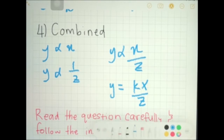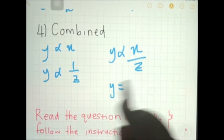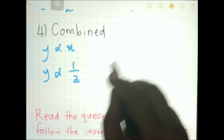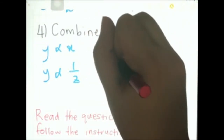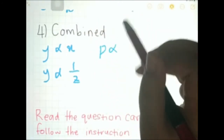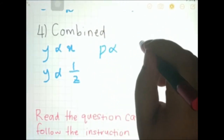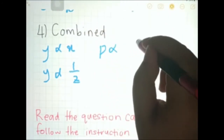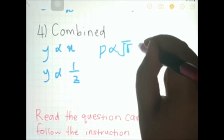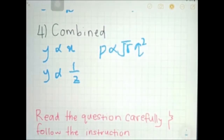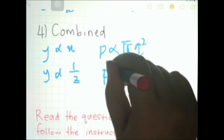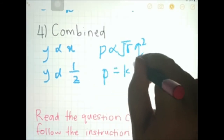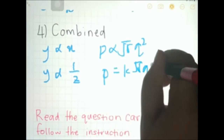Another example: if we say p varies jointly with square root of r and q squared, in equation form we write it as p equals k times square root of r times q squared.